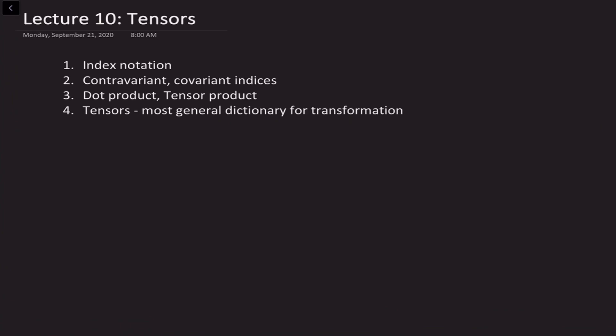Then we'll see that it's also possible to construct a different type of product of four-vectors rather than just a dot product, and this is called a tensor product. Once we understand how these tensor products transform we can generalize this idea to conjecture other objects called tensors which transform in the same way as these tensor products. This gives us a set of generalized objects which have transformations different from four-vectors under Lorentz transformations, and this most general set of objects will allow us to understand the most general way in which Lorentz transformations can act on different objects.